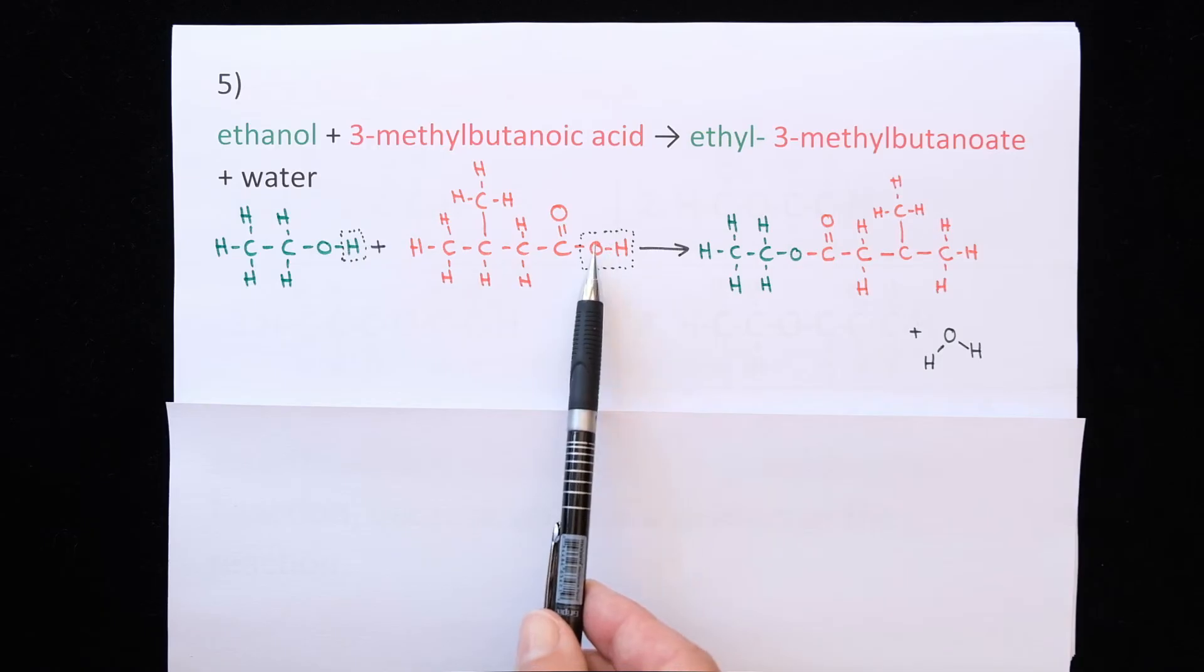The hydrogen from the alcohol, the OH from the carboxylic acid, and you join them together. This name is ethyl-3-methyl-butanoate.